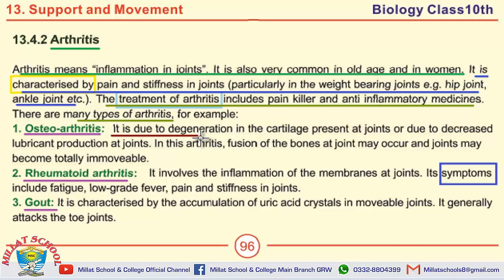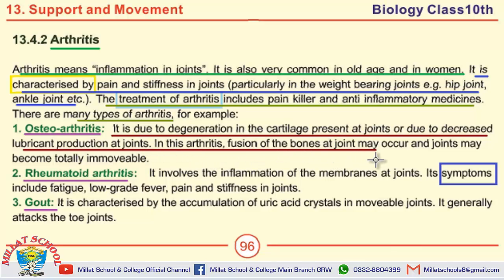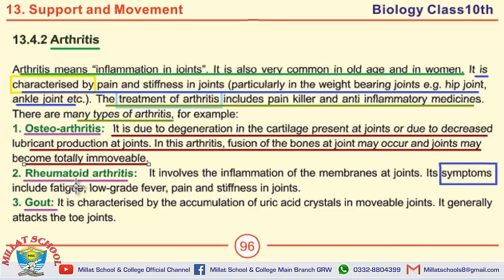Define osteoarthritis: osteoarthritis is due to degeneration in the cartilage present at joints, or due to decreased lubricant production at joints. In this type of arthritis, fusion of bones at joints may occur and joints may become totally immovable. This is the definition of osteoarthritis.